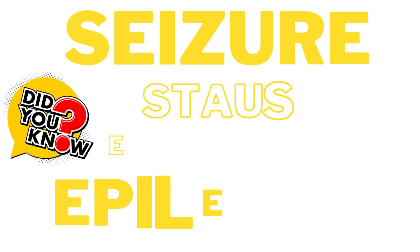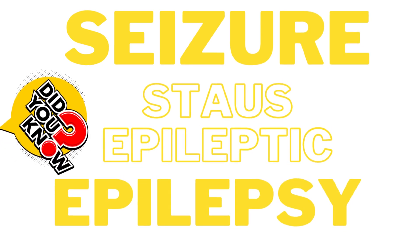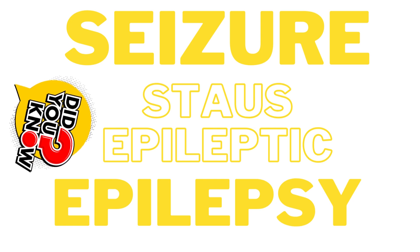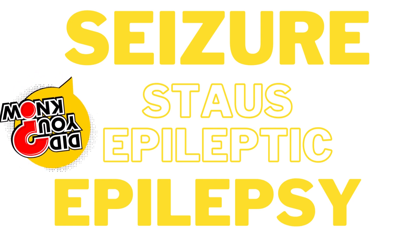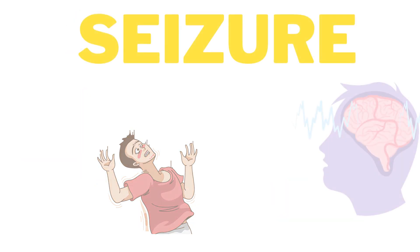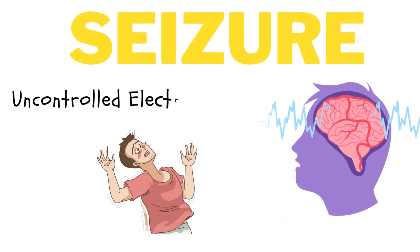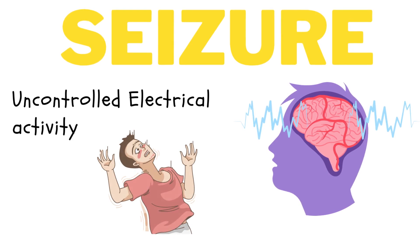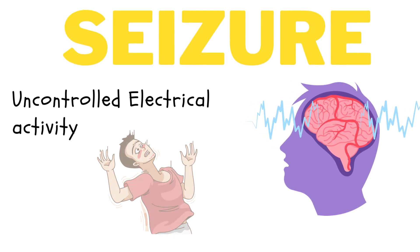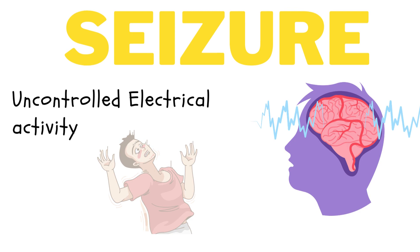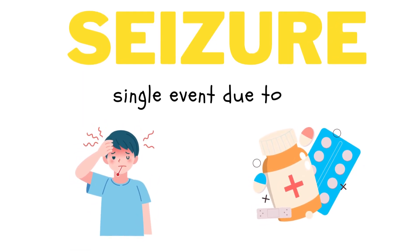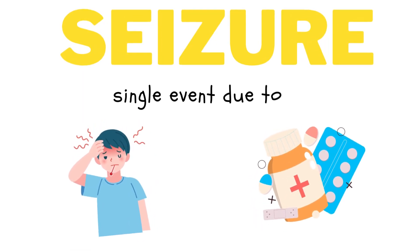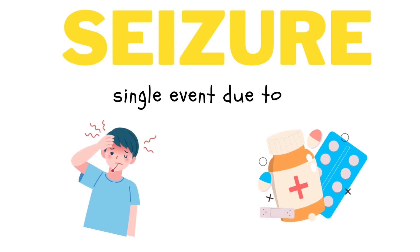You may have come across the terms seizure, epilepsy, and status epilepticus, which almost look similar, but as medical professionals it's important to know the differences. A seizure is a burst of uncontrolled electrical activity between brain cells that causes temporary abnormalities in muscle tone or movement, behavior, sensation, or states of awareness. The term seizure refers to only a single event that may occur due to an acute cause, such as high fever or medication.